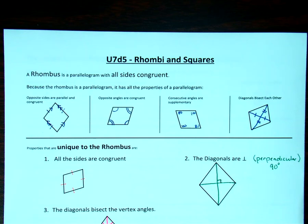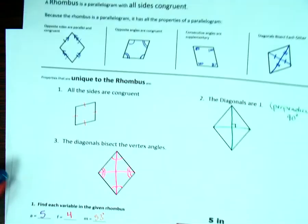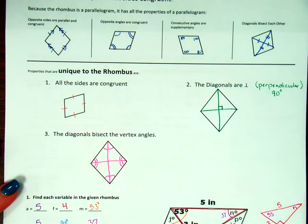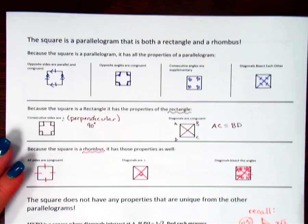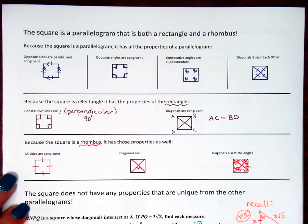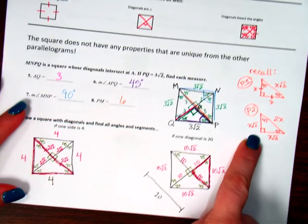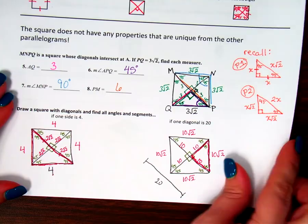Welcome back. In this video, we're going to continue looking at rhombuses and squares, quadrilaterals, parallelograms, all of those good things. We already talked about the rhombus and its unique attributes, and then we looked at a square and said the square has nothing unique — it just steals everything from everybody else. It's the follower of the group. We also reviewed special right triangles to help us with squares.